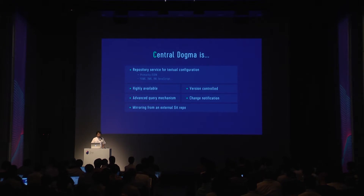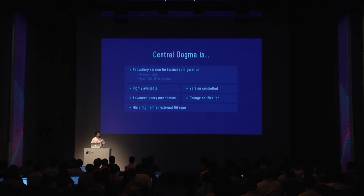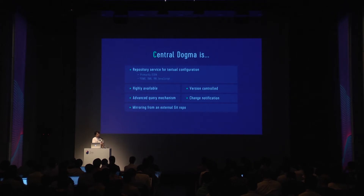Bad changes can be reverted easily. On top of these basic features, Central Dogma also provides some advanced mechanisms like querying and change notification, and mirroring from an external git repository like GitHub and GitLab. We'll revisit each of these bullet points in the next slides for more details.